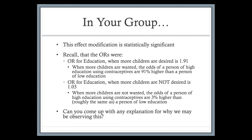If they want to have more kids, they might still be using contraceptives to control when they have those kids or how many they end up having. It's important to note that a survey question asking 'do you want more children — yes or no' doesn't necessarily mean 'are you trying to have children right now.' Someone might want more children but not right now — they might want to wait a few years and space them out. That was my hypothesis for why we're seeing this result.